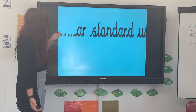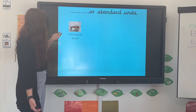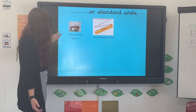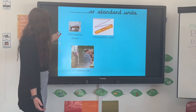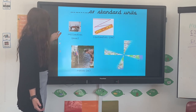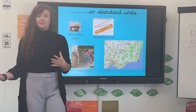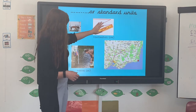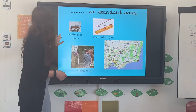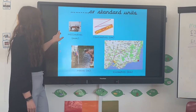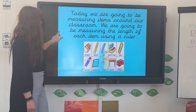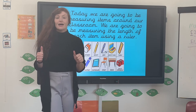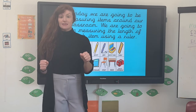Then we've got standard units: centimetres, millimetres, metres, and kilometres. Millimetres are the smallest, then centimetres, then metres, then kilometres. Today we're going to be focusing on centimetres and millimetres.